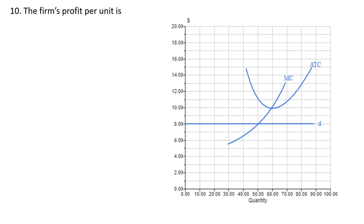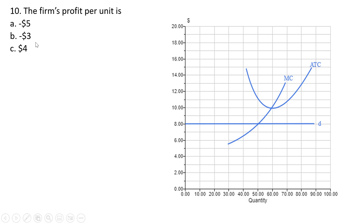Question 10: the firm's profit per unit, defined as price minus average total cost. At 50 units of output, the price is $8 and average total cost is $11. So profit per unit is minus $3. This firm is losing $3 per unit of output. Losing $3 per unit over 50 units gives an economic loss of $150. The answer is choice B, minus $3.